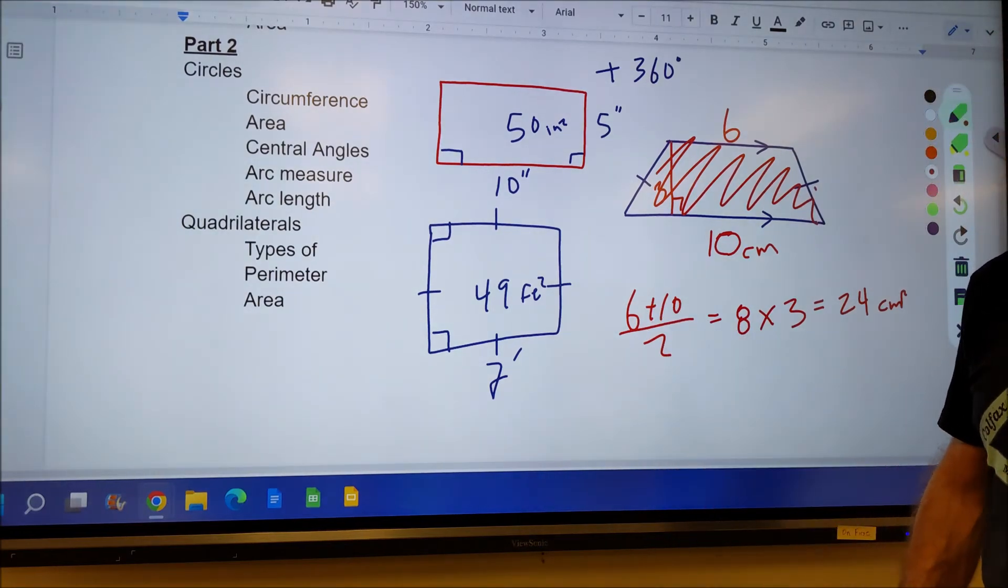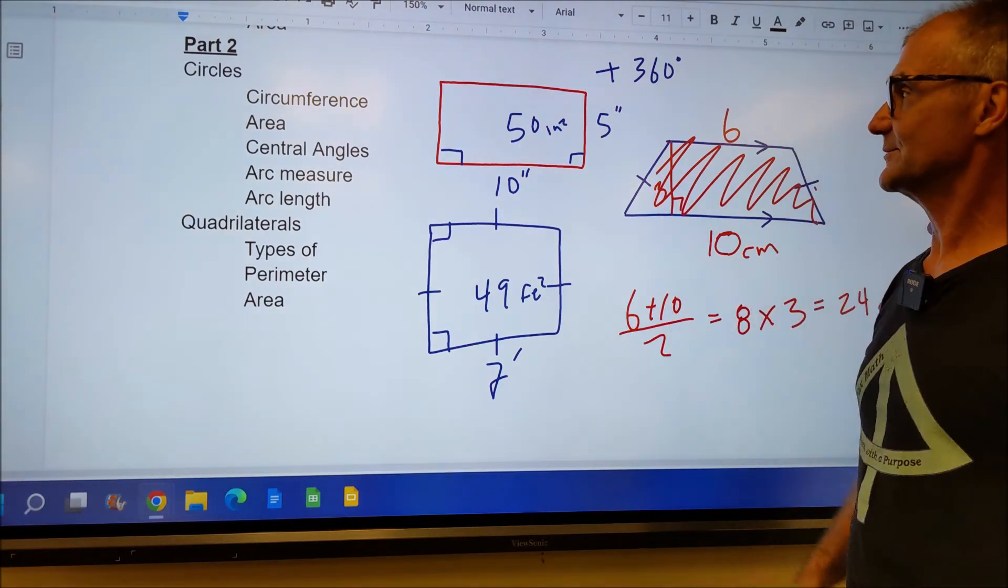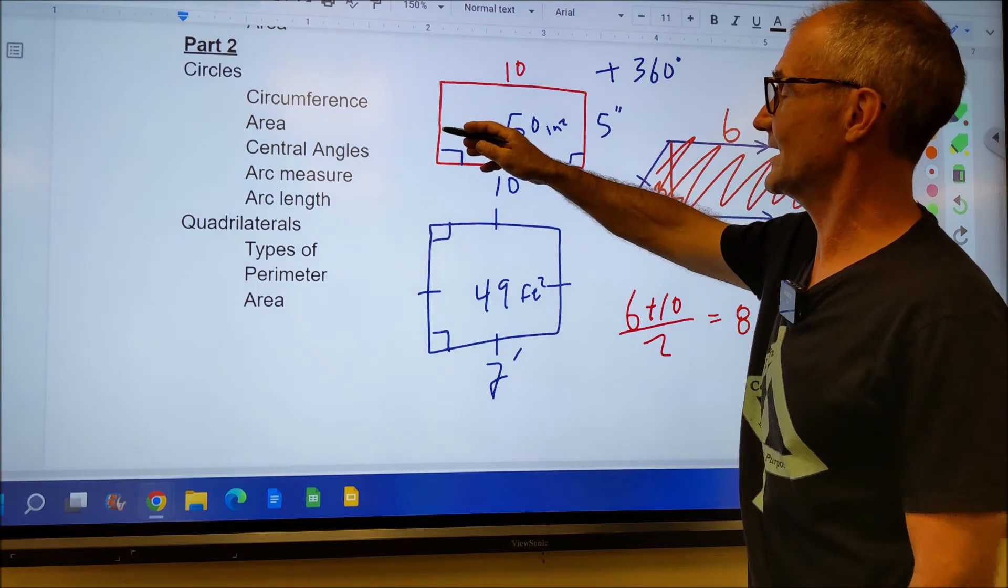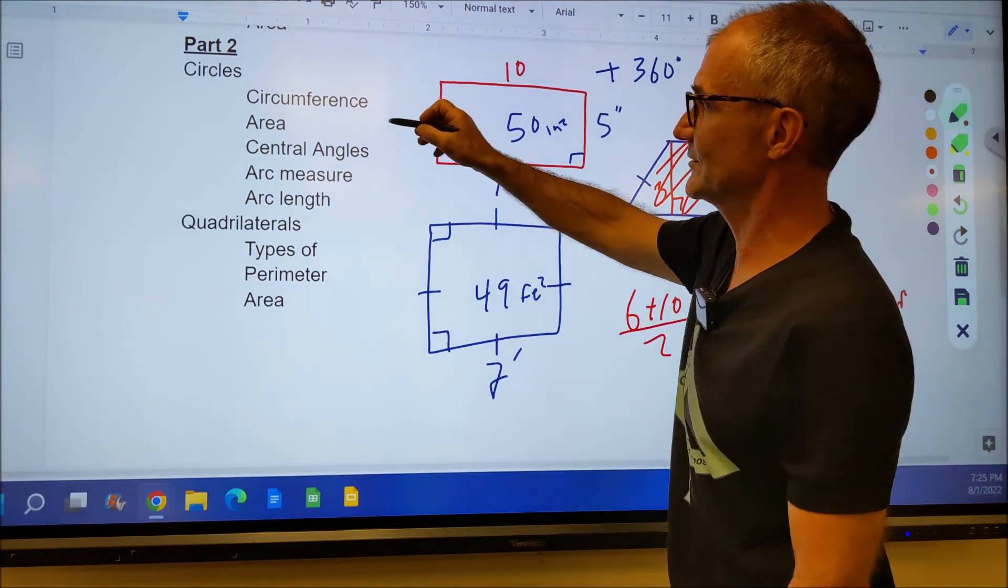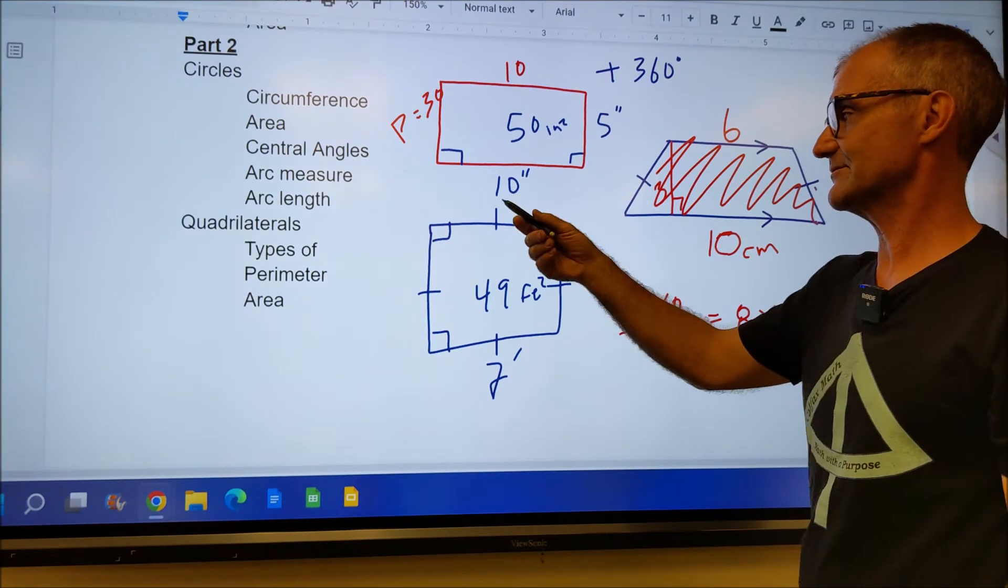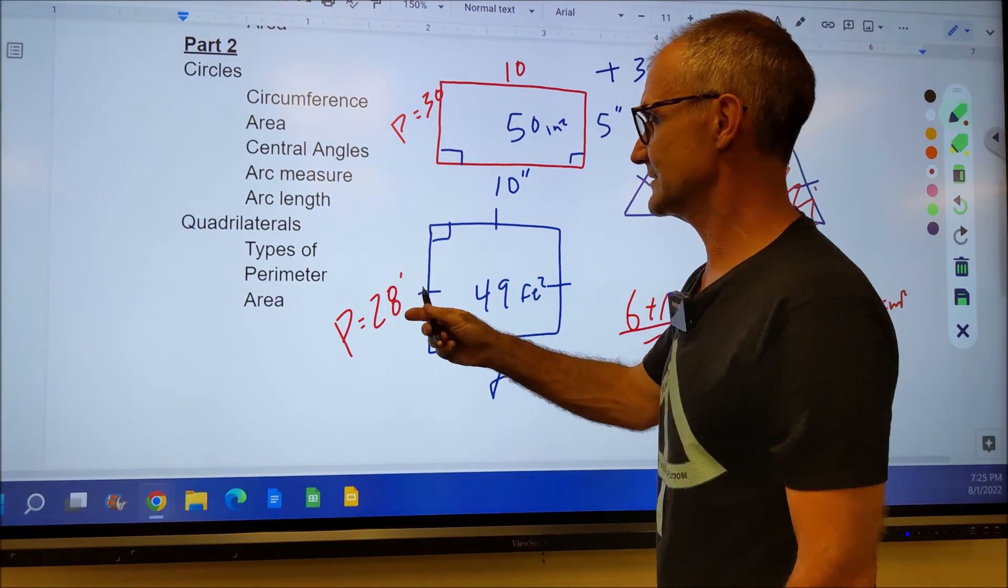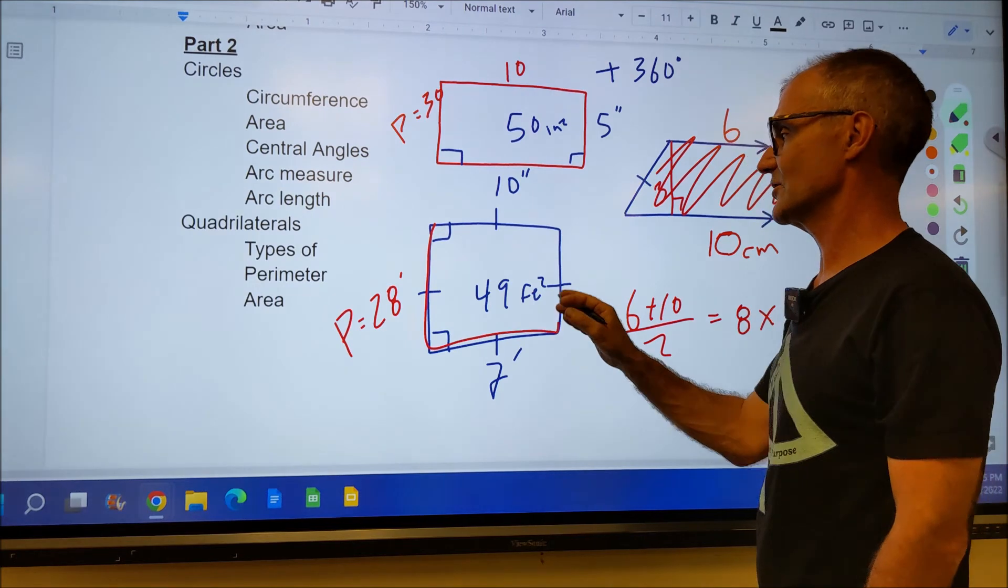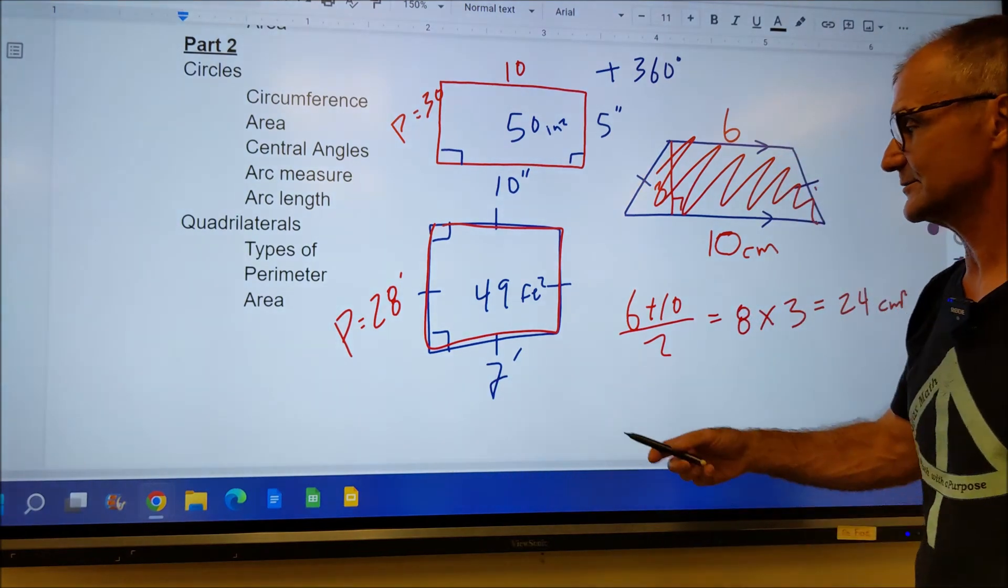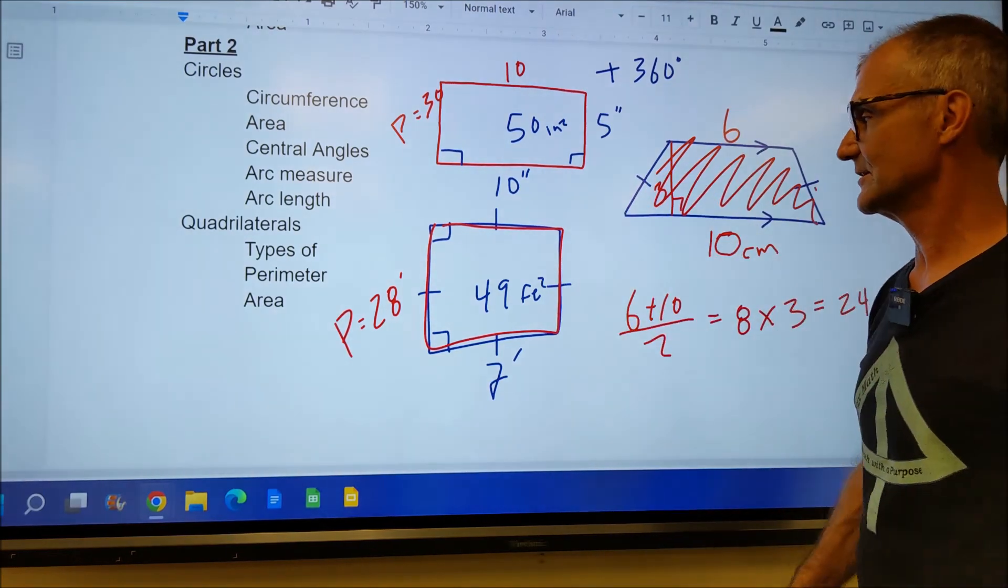Perimeter, you're going to add up all the sides. Find the perimeter of all three of these. Pause the video and then I'll do it. So here's the perimeter. The first one, this is 10, this is 10, this is 5, this is 5. 10 plus 10 is 20, plus 5 and 5 is 30. So the perimeter here is 30. On the square, all four sides are 7. So 7 plus 7 plus 7 plus 7, or 7 times 4, is a perimeter of 28 feet, singular units, because you're talking about the length of a line going around the outside. Versus when you're talking about area, you have 7 feet times 7 feet, feet times feet to get square feet.